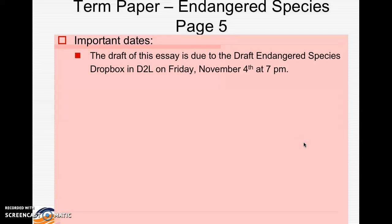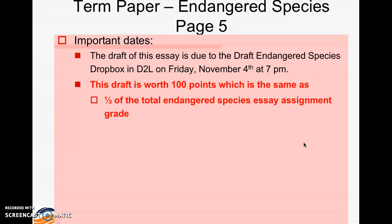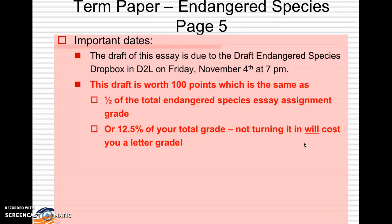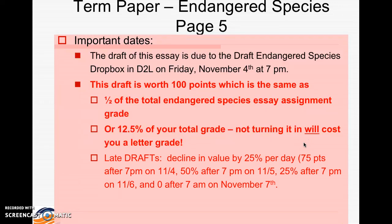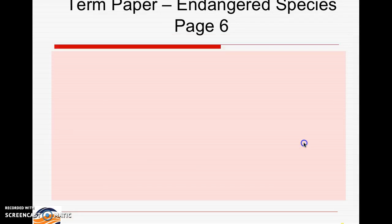Important dates: the draft essay is due to the drop box in D2L on Friday, November 4th at 7 p.m. This draft is worth 100 points, which is half the total Endangered Species Essay assignment grade — 12.5% of your total grade. Not turning it in will cost you a letter grade. Late drafts decline in value by 25% per day, down to 75 points, and zero after November 7th. Just turning in the draft by the deadline gets you 100 points — it's worth it, do it.